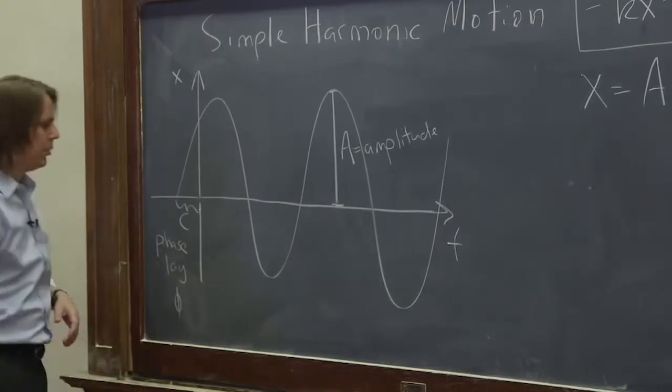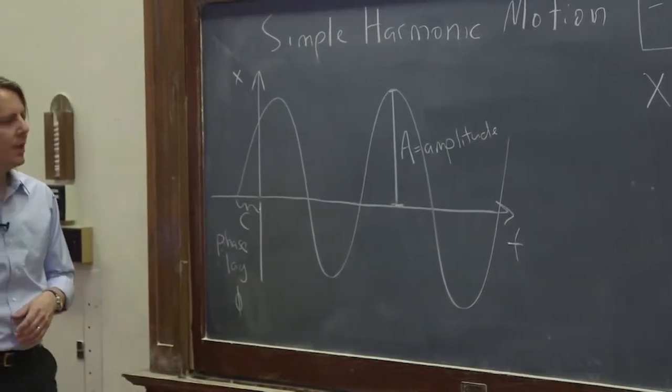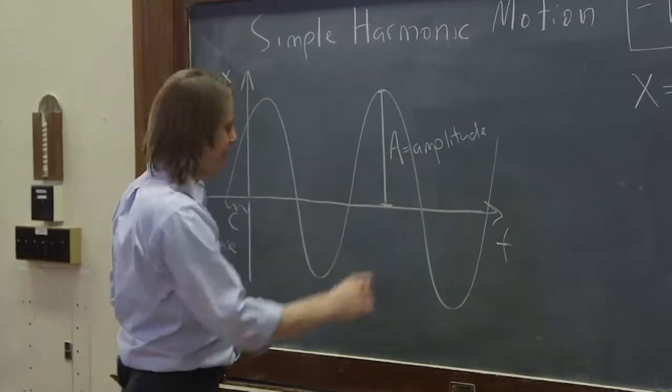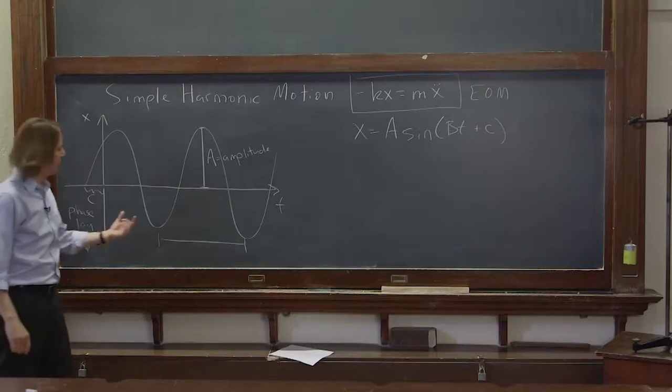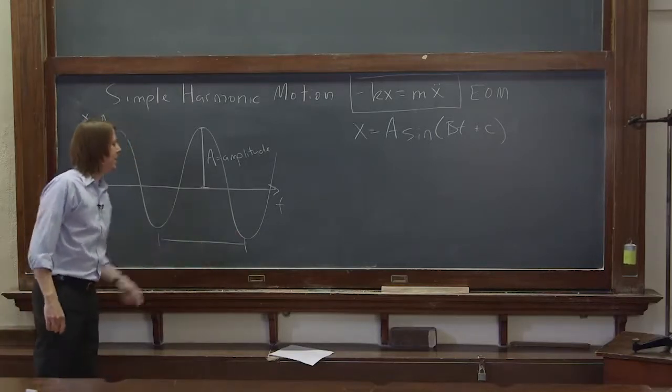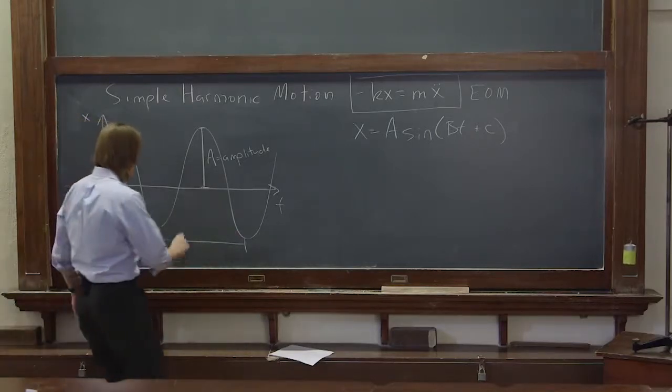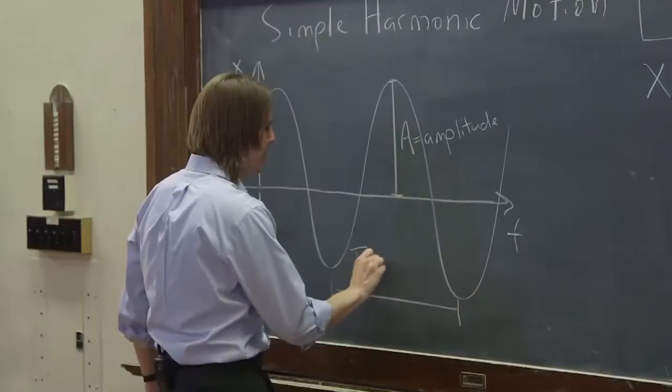And it's usually written as phi. And then finally, the other property of a sinusoid we care about is the period, the total time for one cycle. It would look like you could define it as between these two troughs. It's usually, we call it T. Big T is the period.